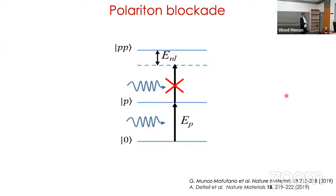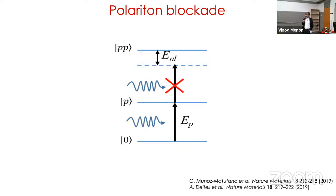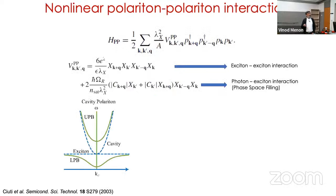Now, why study Rydberg exciton polaritons? The concept of polariton blockade: you create one polariton state, but if polariton-polariton interaction is large enough, the energy required to create a second polariton pays a penalty from the non-linear interaction — so the second photon won't be absorbed. This is analogous to the Rydberg blockade. The light coming out should show anti-bunching in a g² measurement. The first evidence appeared in 2019, where the g² value went to about 0.95, indicating photon correlations.